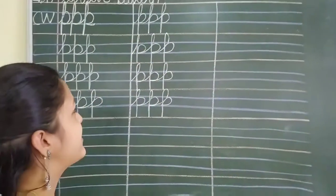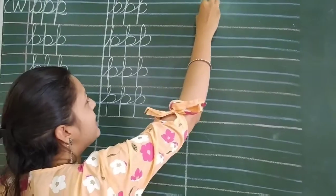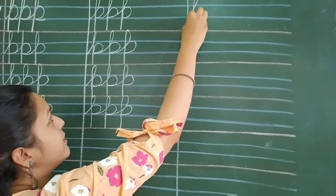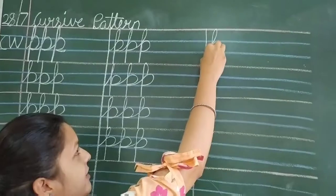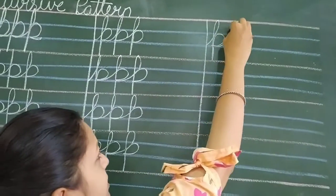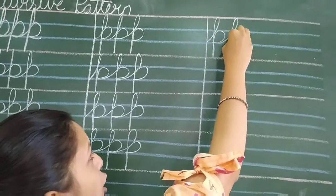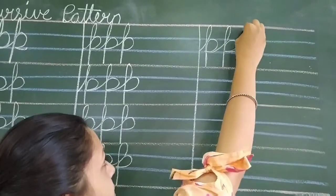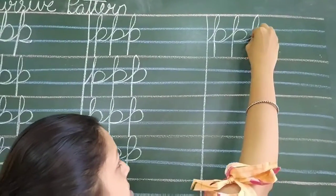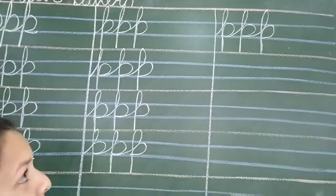Now, let's write this side. Letter P. This way. P for parrot. P for parrot.